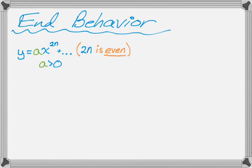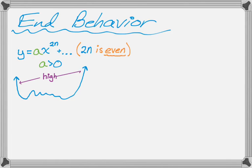If a is greater than 0, all even-degree polynomials with a positive leading coefficient will eventually do this kind of thing. I don't really know what's going on in the middle, but I definitely know that to the left and to the right we have what I like to call high to high. So it starts high and it ends high — every positive leading coefficient even polynomial will do that.